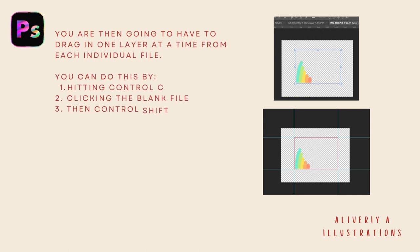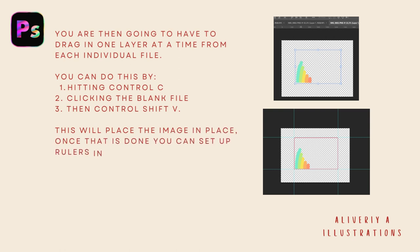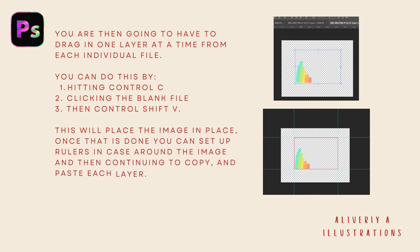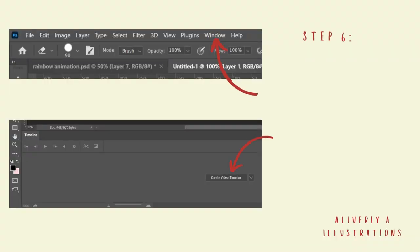You can do this by hitting Ctrl+C, clicking the blank file, then Ctrl+V. To place it in place you can use Ctrl+Shift+V, which places each image at the exact same spot as the one before. Once that's done, you can set up rulers around the image and continue to copy and paste each layer to make sure everything is aligned perfectly.